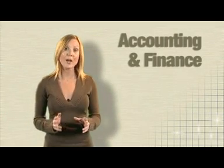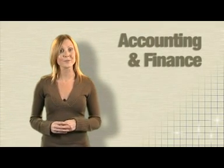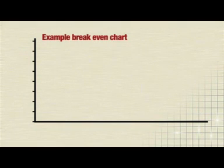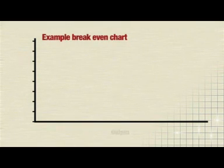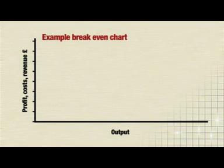First of all, I'll show you where each line goes, and then I'll go through a chart using some figures. First, give the chart a title. Next, plot output on the horizontal axis here. Then, plot revenues, costs or profits on the vertical axis here, and label them both.